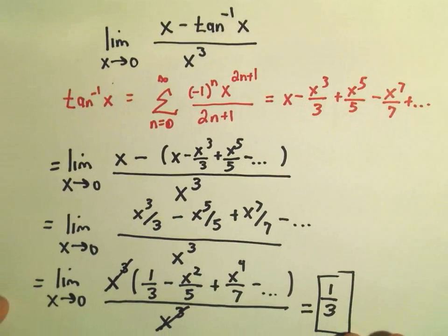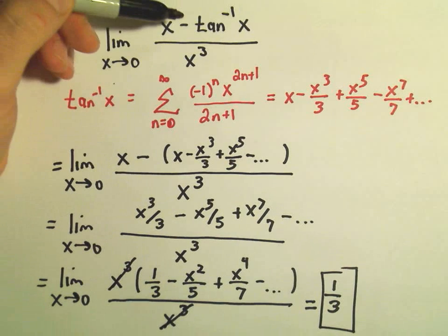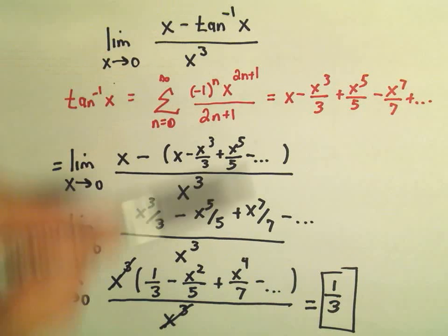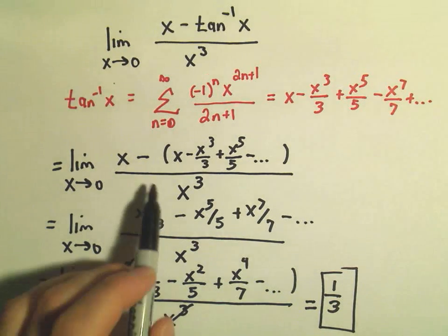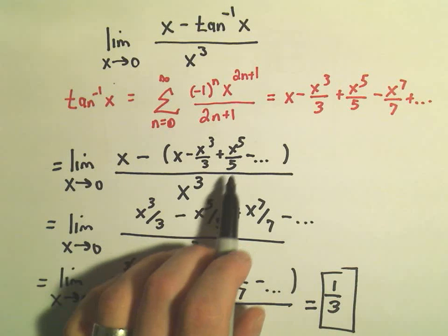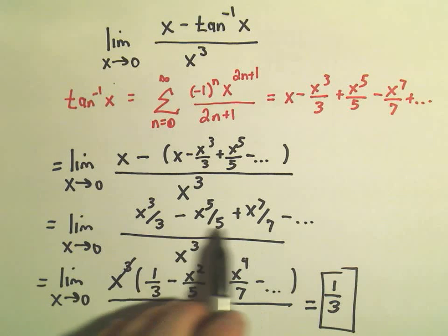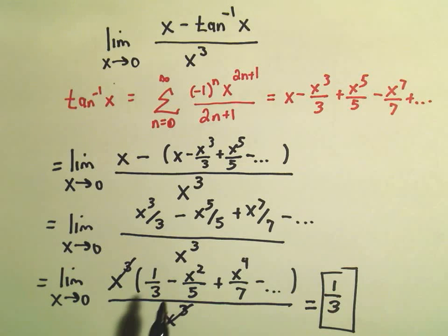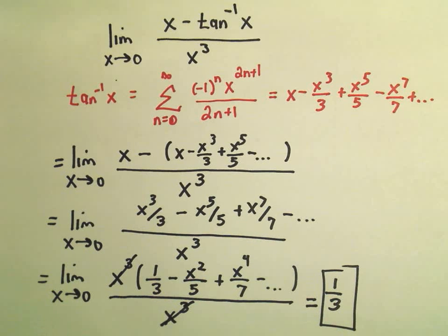So again, basic idea in these problems. Anything that's not a polynomial, typically that's where you'll use your series expansion. Write out a few terms, cancel what is readily cancelable. Factor out something, typically to try to cancel out whatever's on the denominator. And then you'll just plug in the value. Pretty typical type of problem. I think most other limit problems that involve series you could approach in the exact same way.